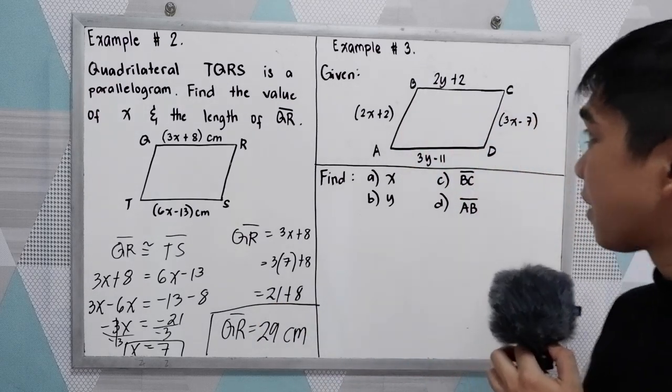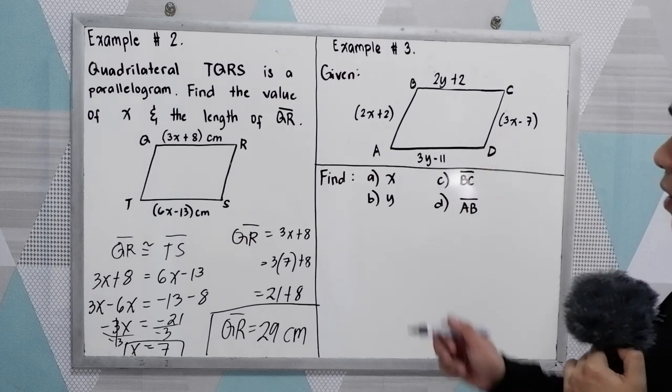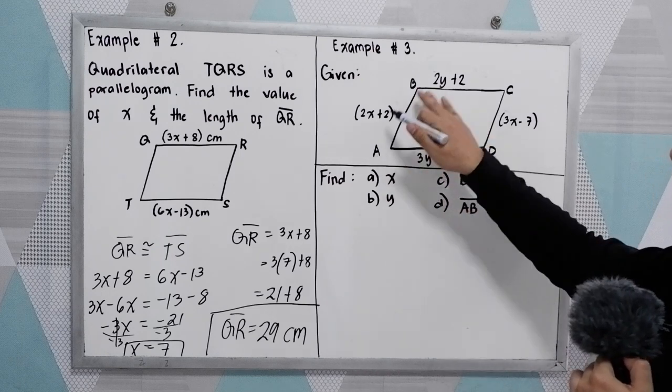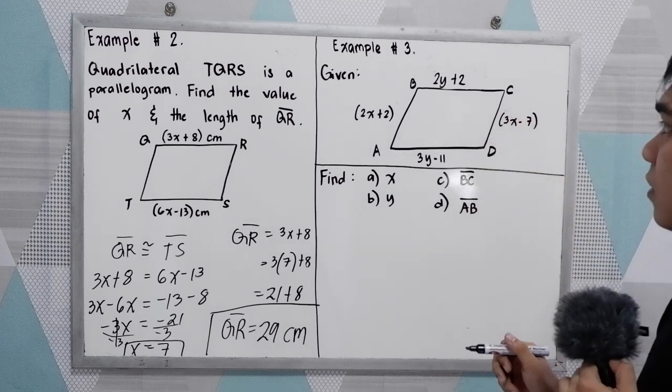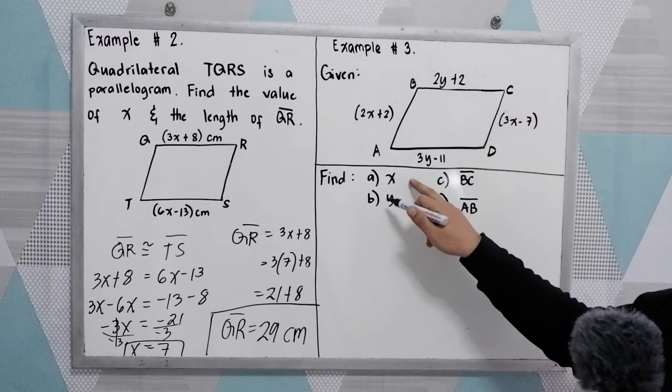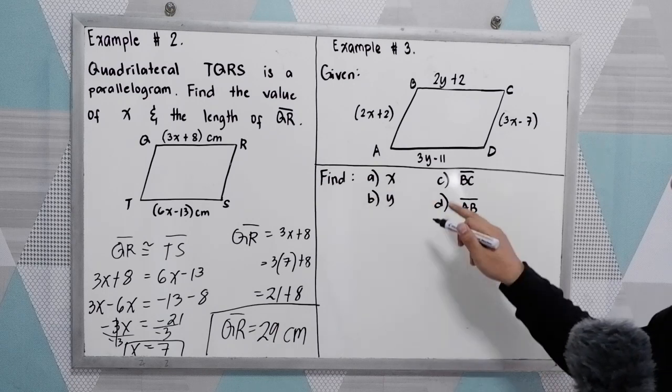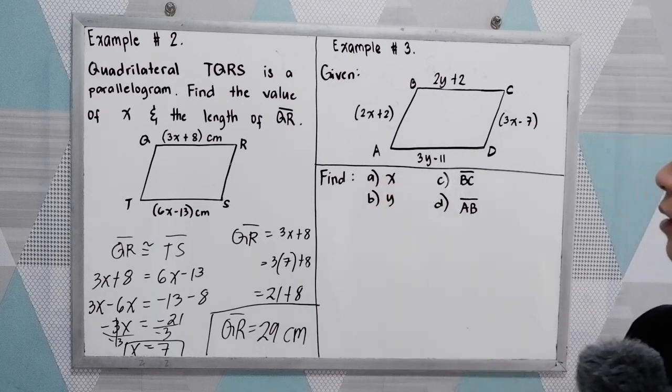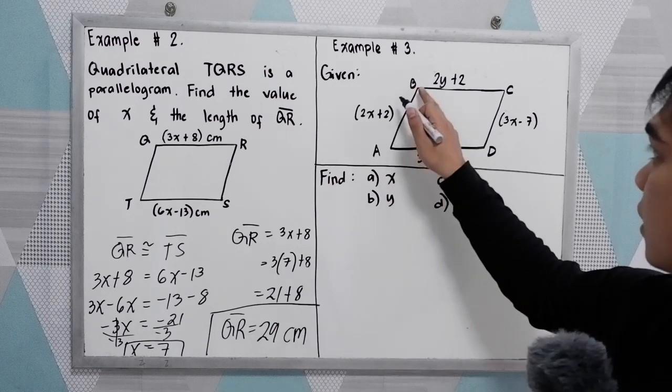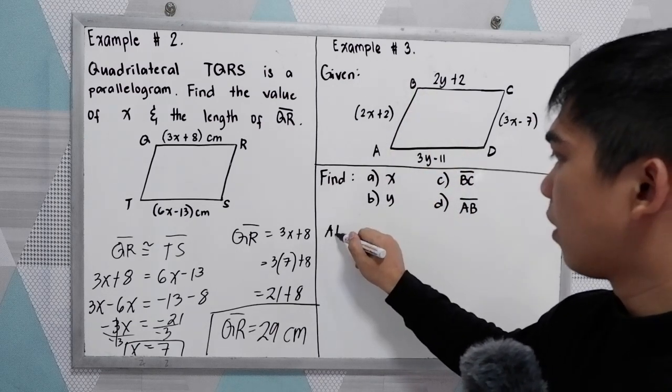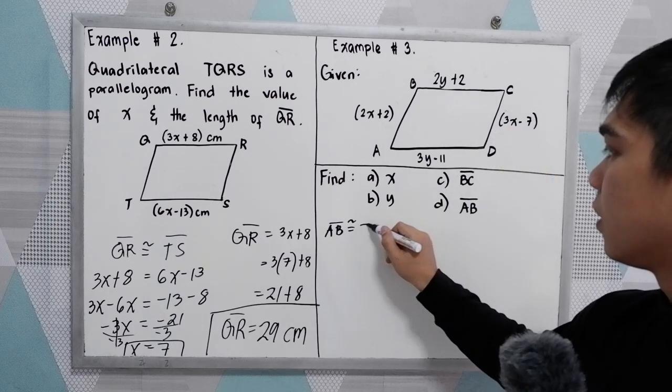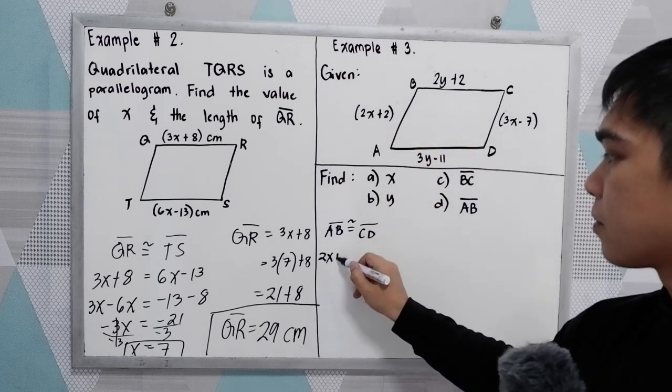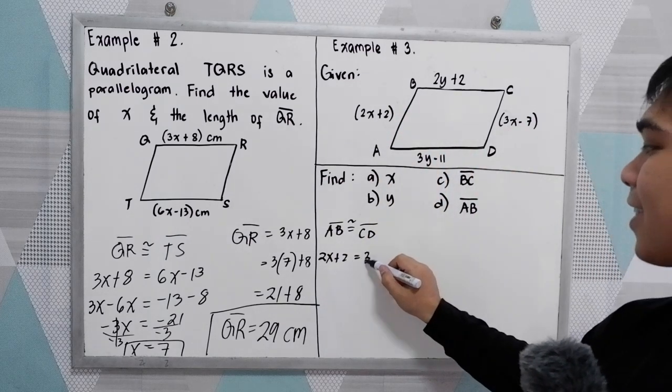Now example number 3. So we have our given. Parallelogram ABCD. And we have the corresponding sides and their given. We're going to find the value of x, the value of y, segment BC, and segment AB. Now let's start with x. So we know that opposite sides are equal. So we can say that AB is congruent to CD. Then substitute the given. 2x plus 2 is equal to 3x minus 7.